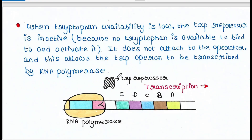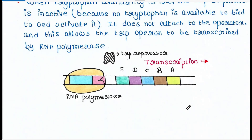When tryptophan availability is low — meaning tryptophan is absent or very low in the bacterial media — the operon should be switched on. At that time the trp repressor is inactive, because there is no tryptophan available to activate it. Since the repressor is in an inactivated state, it does not attach to the operator site. With the operator site free and the promoter site free, RNA polymerase binds and transcription proceeds. The five genes are transcribed and we get the enzyme proteins that synthesize tryptophan in the bacterial system.